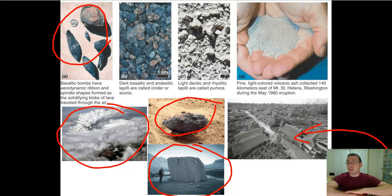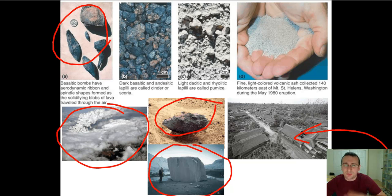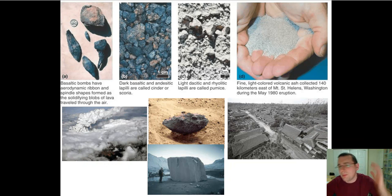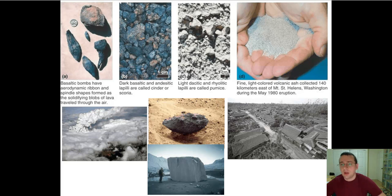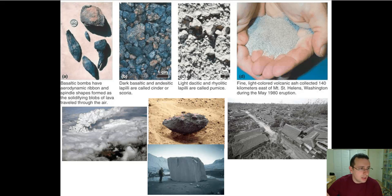Ash can block sunlight by creating a massive cloud that covers the entire sky. This is actually what caused a major mass extinction — a series of supermassive volcanoes exploded and covered the entire Earth with ash, causing the death of all the producers and subsequently one of the biggest extinctions that ever happened on Earth.